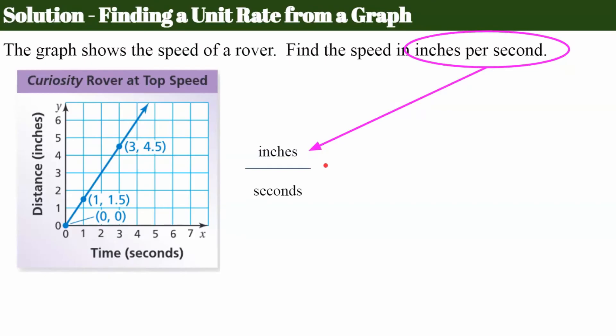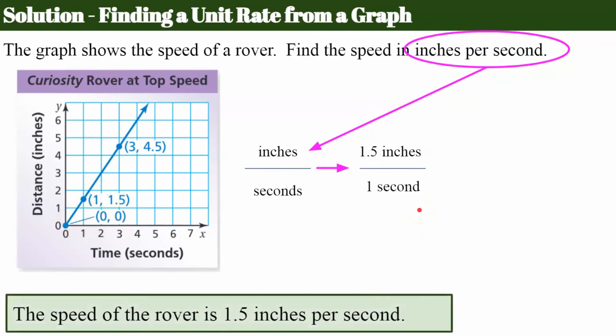We want to know inches per second. I can find right here that when the X is one, that's my unit rate when I have a proportional relationship. So my work here is done. I know that the speed of the rover is one and a half inches per second.